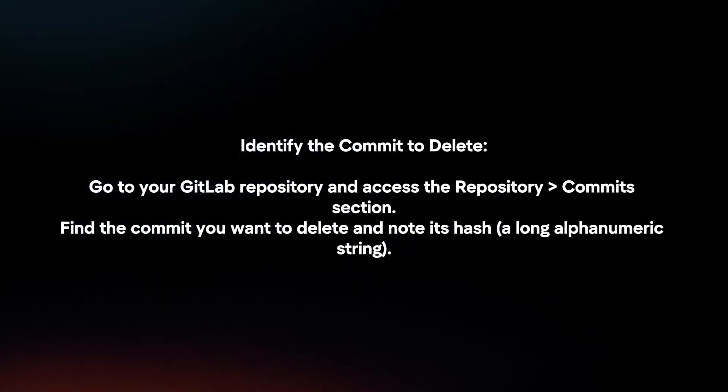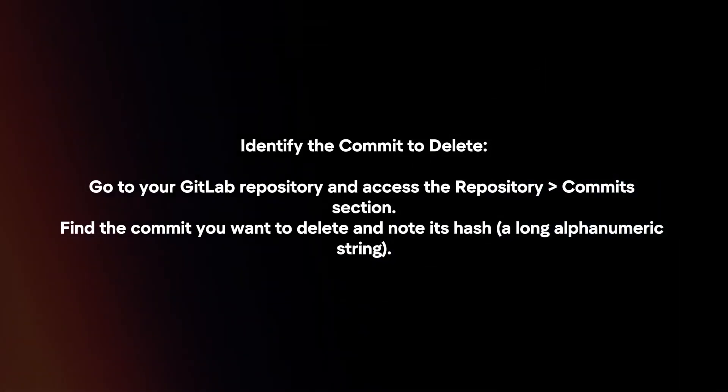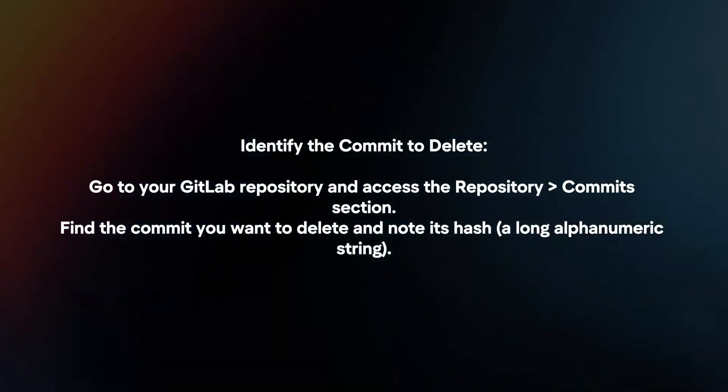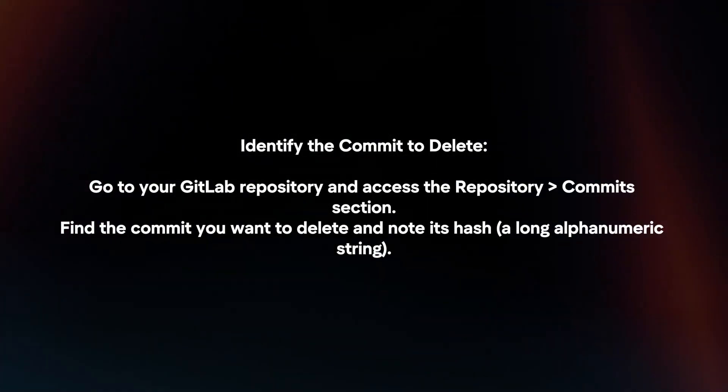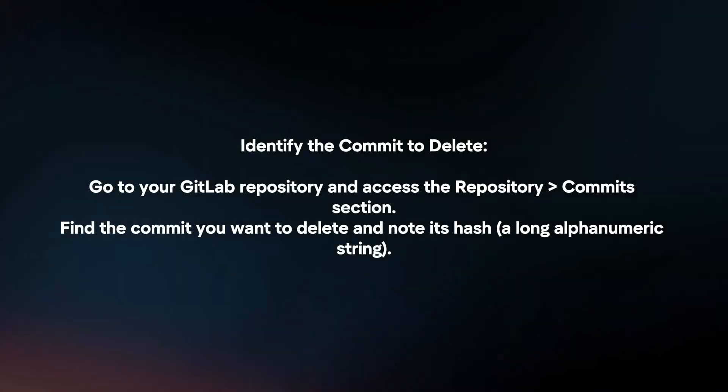Identify the commit to delete. Go to your GitLab repository and access the repository commit section. Find the commit you want to delete and note its hash.